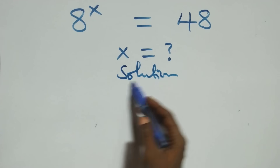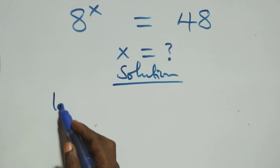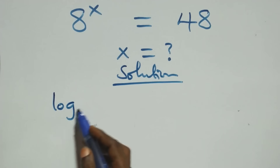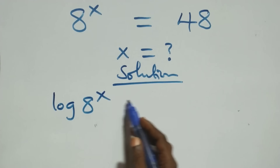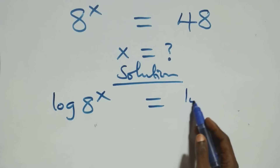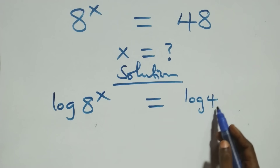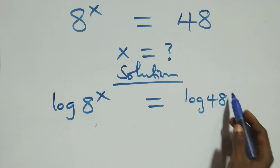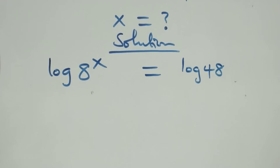On what we have here, we take the log on both sides. At this here we have log 8 raised to power x equals to log 48 on this side. The next step here,